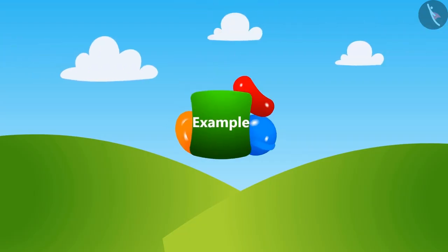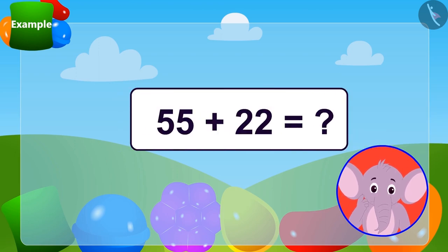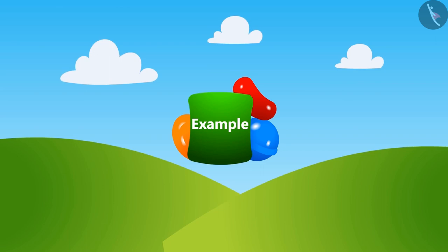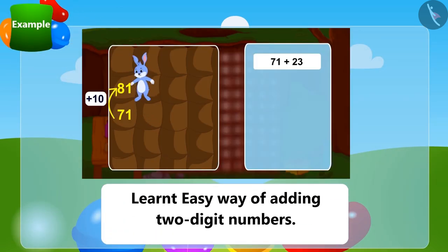Children, you too can make a grid like Bunny's house and then try to find the answer to this puzzle. In this lesson we learned the easy way of adding two digit numbers. We will learn more about this in the next lesson.